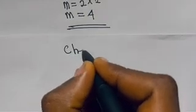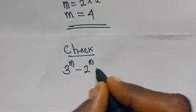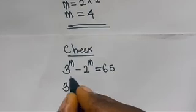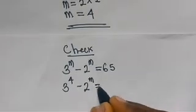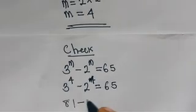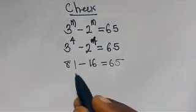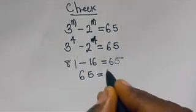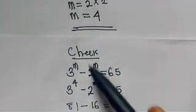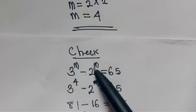Let's check. The given question is 3 raised to the power m minus 2 raised to the power m equals 65. With m equals 4, we have 3 raised to the power 4 minus 2 raised to the power 4 equals 65. 3 to the power 4 is 81, minus 2 to the power 4 which is 16, equals 65. And indeed 81 minus 16 equals 65. Therefore m equals 4 satisfies the given equation.